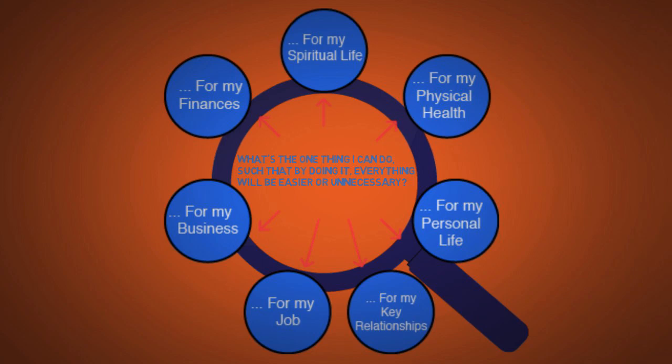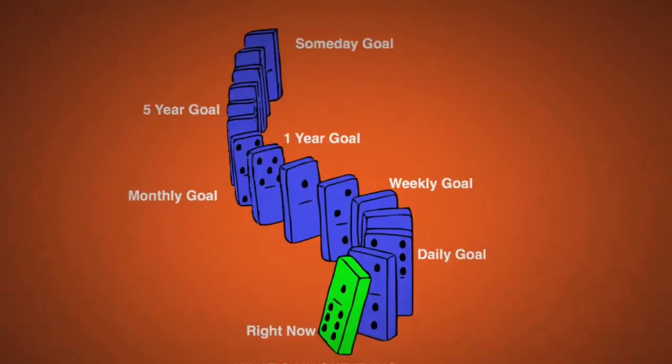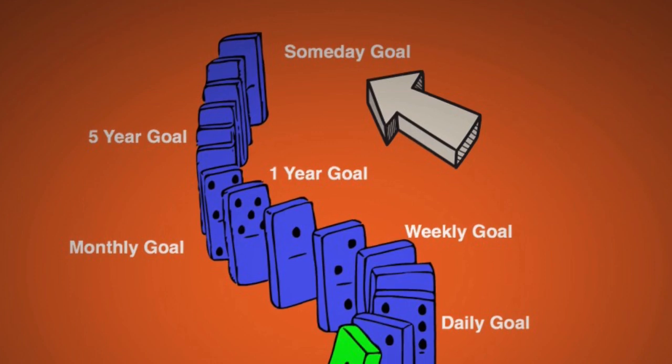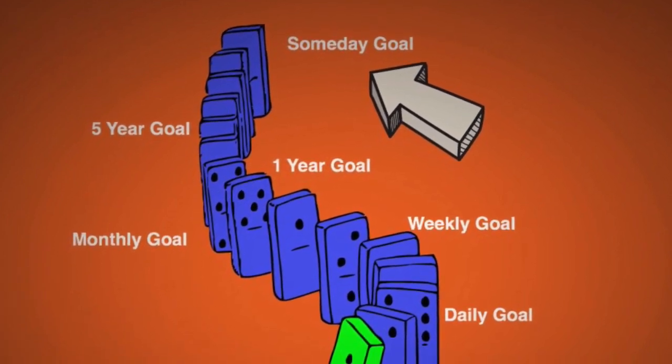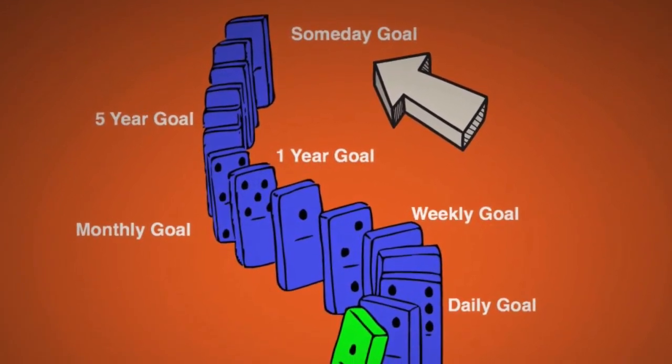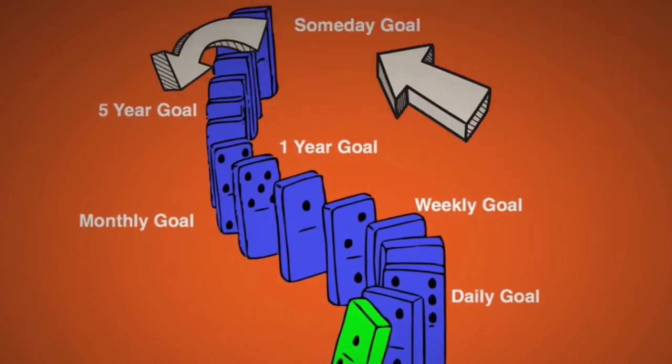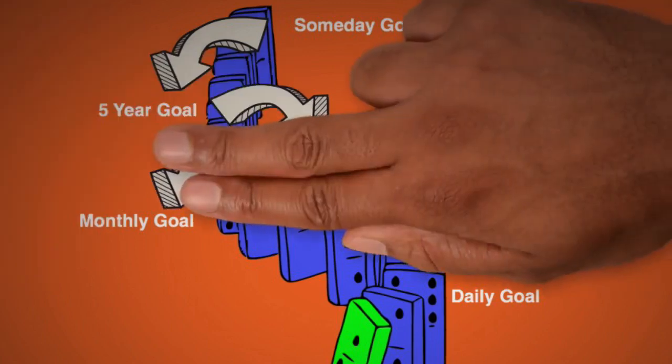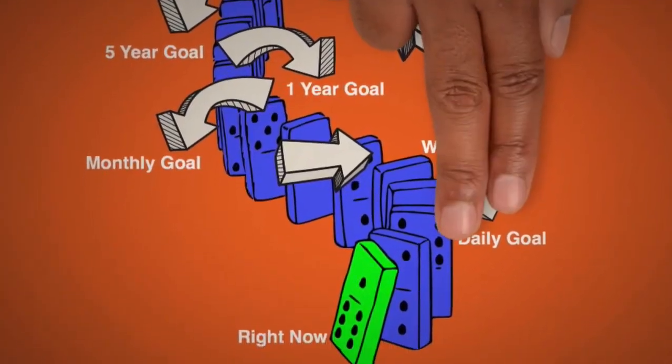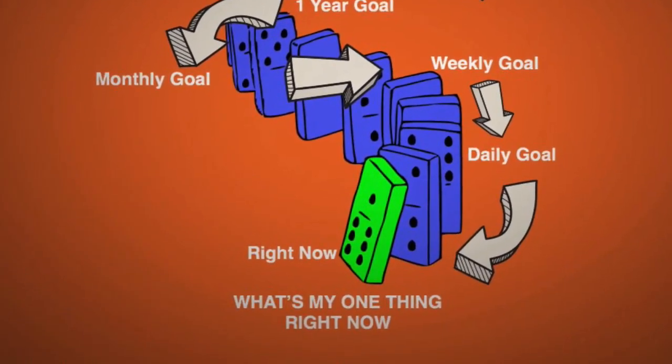But avoid asking questions like, what do I do next? Instead think big and ask yourself what your someday goal is and then work your way backwards. Ask yourself, based on your someday goal, what is the one thing you can do in the next 5 years? Then based on your 5 year goal, what's the best thing you can do this year? Keep doing this until you have figured out what's the one thing you can do right now.